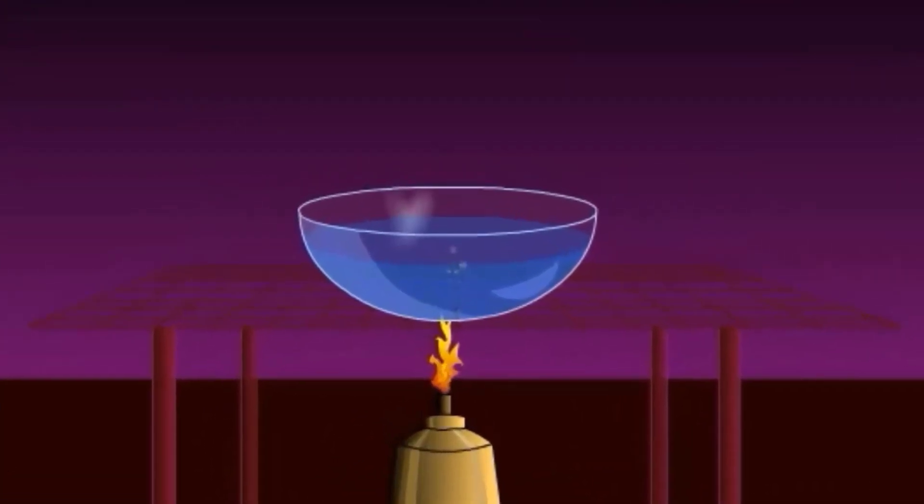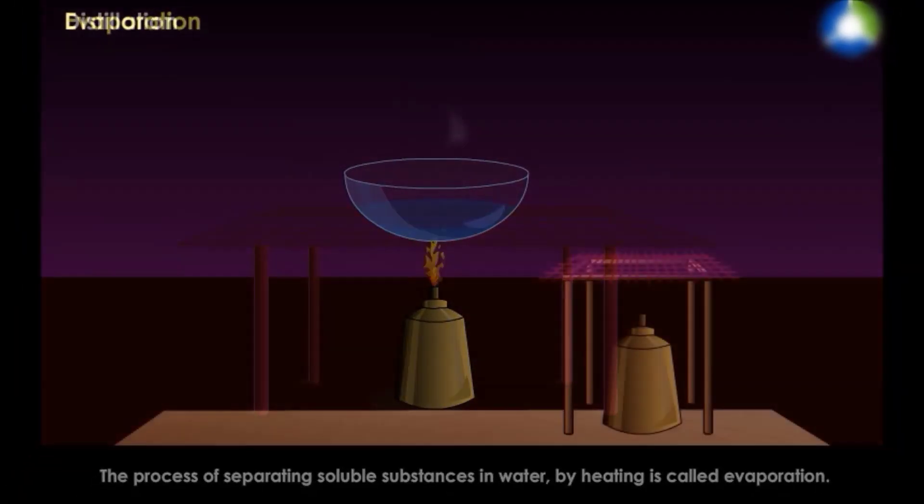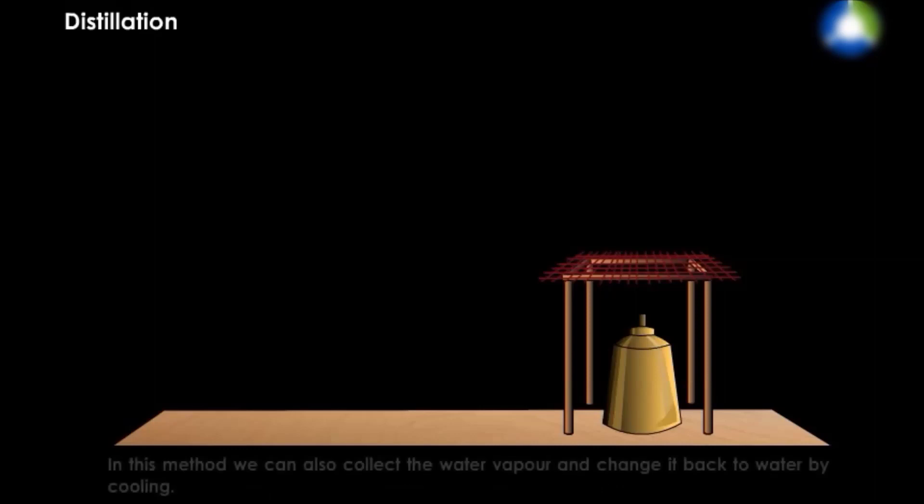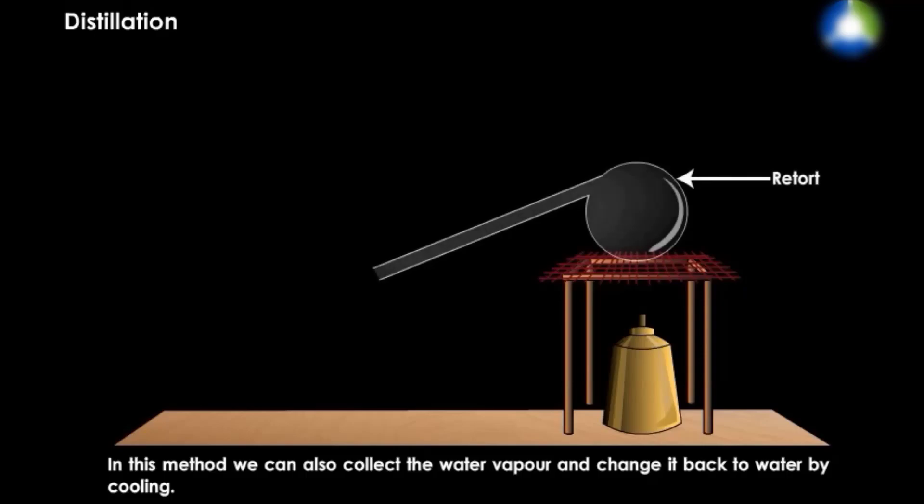Here the water is converted into water vapor. Now we will discuss distillation. Distillation is a very good method of purifying water. In this method, we can also collect the water vapors and change it back into water by cooling. For example, take some salt water in a retort.